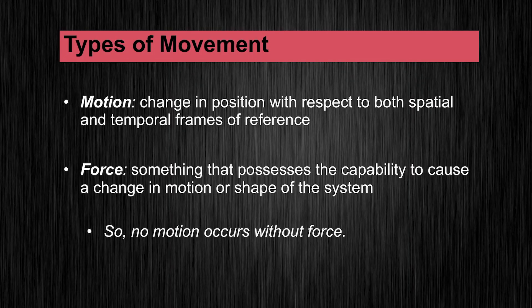Before we talk about different types of movement that can occur in our free body diagrams and in these Cartesian coordinate frames of reference, we have to talk about some different types of movement. Motion is defined as a change in position with respect to both spatial — where it is in space — and temporal — where it is in time — frames of reference. In order to move you have to have a change in position and a change in time. You can't have an instantaneous movement, neither can you have a change in time with no movement; neither of those things would be motion, you have to have both.